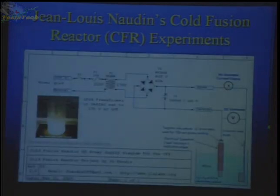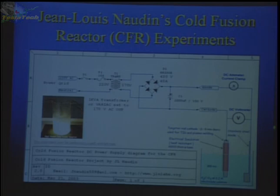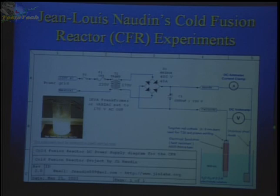This is a circuit diagram here. It's fairly simple — just a transformer connected to a full wave bridge rectifier capacitor. He used a simple ammeter and voltmeter. He's applying high voltage to the cathode, which is made of tungsten, in an electrolyte solution with a stainless steel anode. And he observed this over-unity effect.